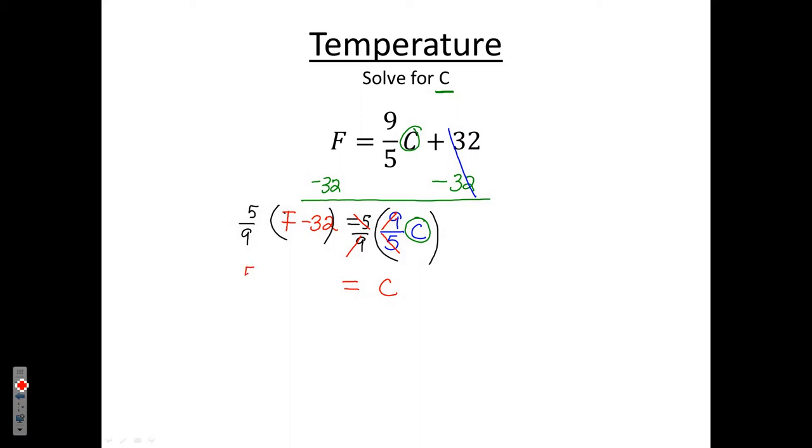On the other side, of course, I still have 5/9 and then in parentheses, F minus 32. So if I rewrite, I'm just going to change the sides, flip it. So if I have C equals, and it's going to be equal to 5/9, then in parentheses, F minus 32.